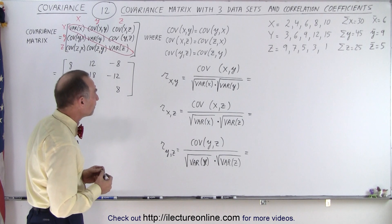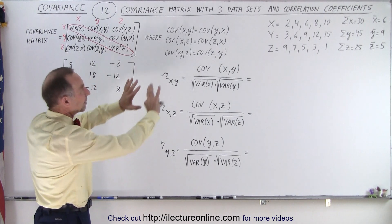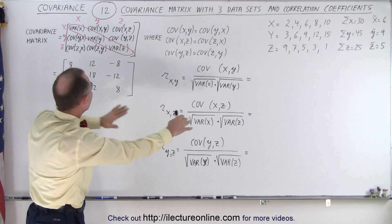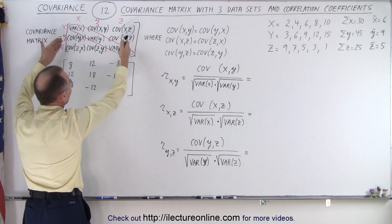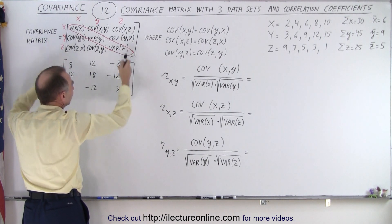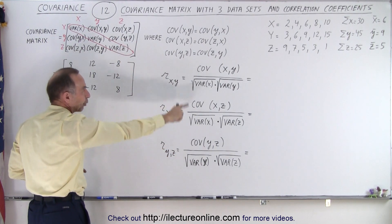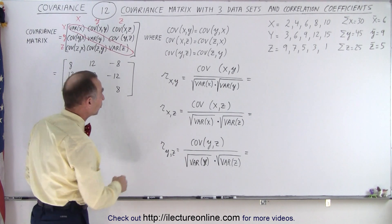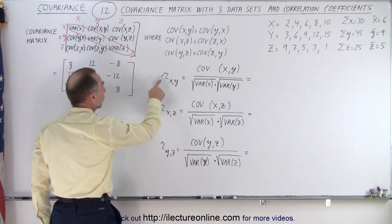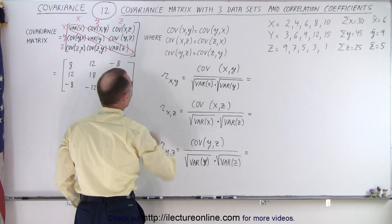Let's see what these end up being. Notice that I don't have any numbers written down, but I have the matrix and my translation of the matrix, so I can find all the covariances and all the variances that I need. First, the correlation coefficient between the two data sets x and y.